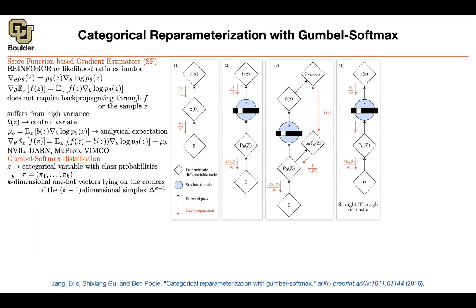They have to add up to one — if one of them is one, the other components need to be zero. And these are the corners of a simplex. It usually has one less dimension than the total number of classes or your vocabulary size. These categorical variables have nice properties that their expected values are actually these probabilities.